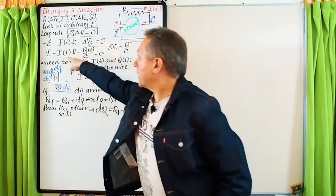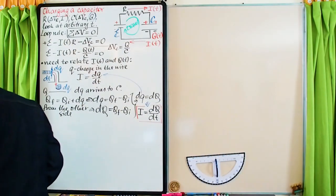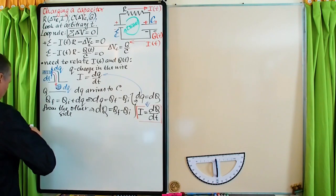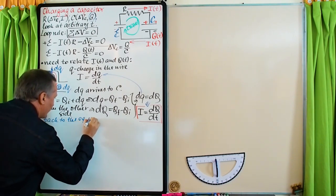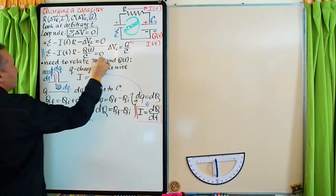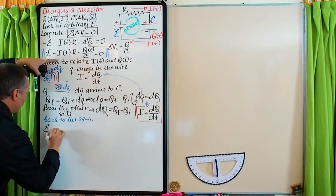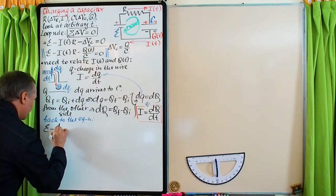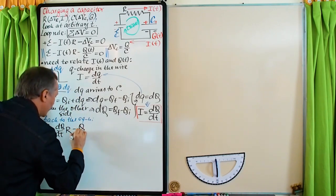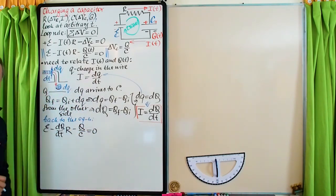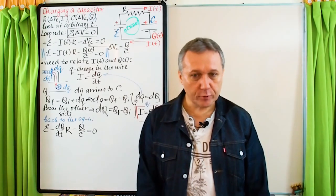Now, once we connect current with charge, we go back to our loop equation and rewrite it: EMF minus (dQ/dt)·R minus Q/C = 0. Now we have one unknown, Q, which is a function of time — a first-order differential equation. Before solving it, let's make it look nicer. Dividing through by minus R gives: dQ/dt + Q/(RC) minus EMF/R = 0.